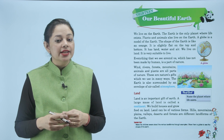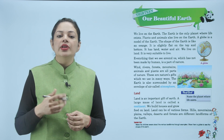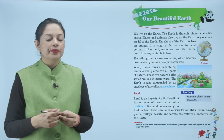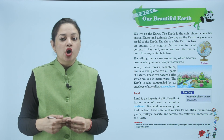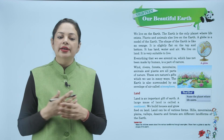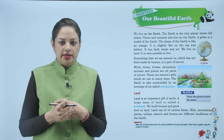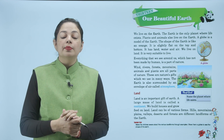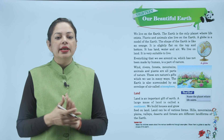The earth has land, water and air. We live on land — it is very suitable to live. Our solar system has eight planets, and earth is the only planet where life exists, where plants and animals can survive.